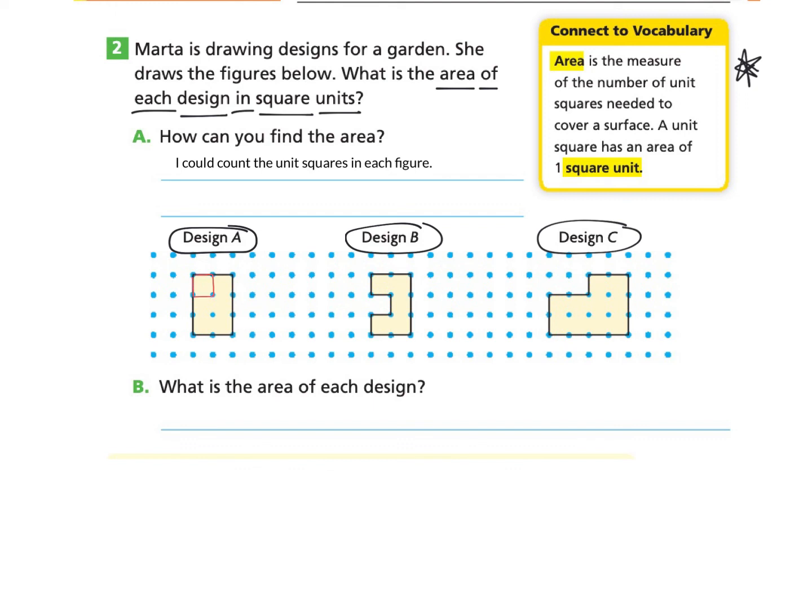There are one, two, three, four, five, six unit squares in design A. And in design B, there are one, two, three, five unit squares in this figure.